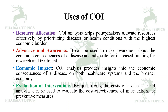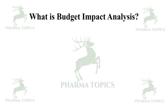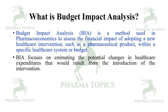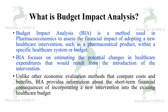What is budget impact analysis (BIA)? BIA is a method used in pharmacoeconomics to assess the financial impact of adopting a new healthcare intervention, such as a pharmaceutical product, within a specific healthcare system or budget. BIA focuses on estimating the potential changes in healthcare expenditures that would result from the introduction of the intervention, providing information about the short-term financial consequences of incorporating a new intervention into the existing healthcare budget.